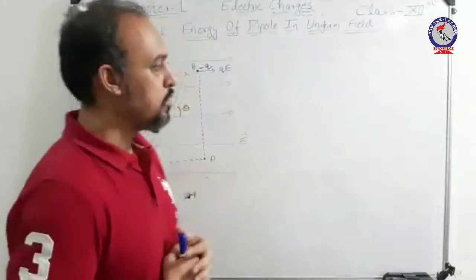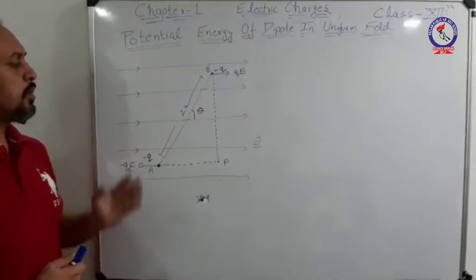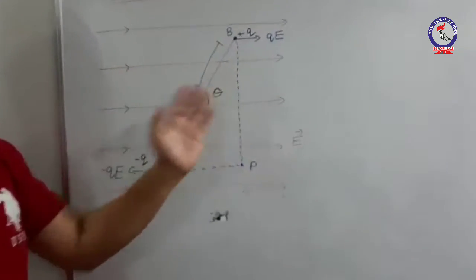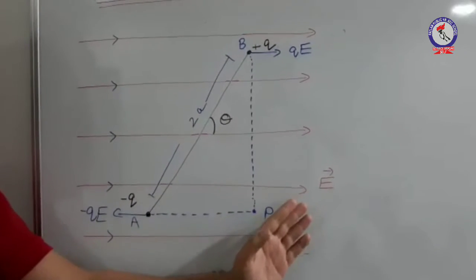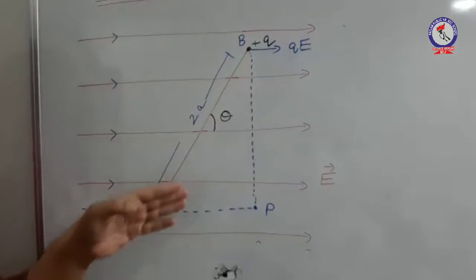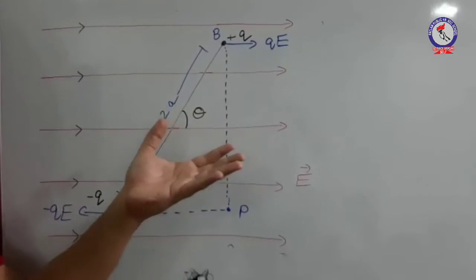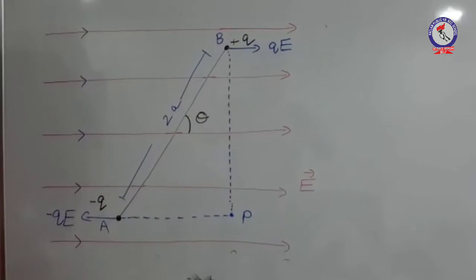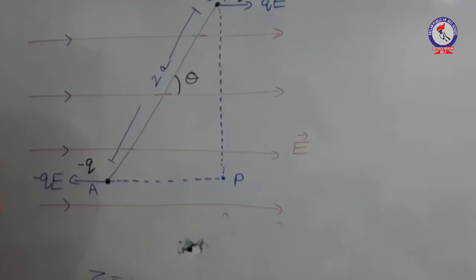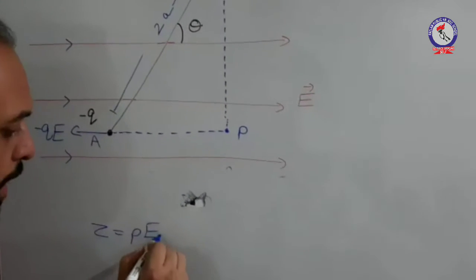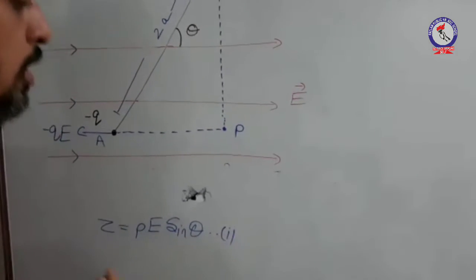Now, go through this figure. As you can observe, these horizontal lines represent the uniform electric field. A dipole is kept in this uniform field. We have calculated in the previous section that the torque acting on the dipole at any instant is Pe sinθ.